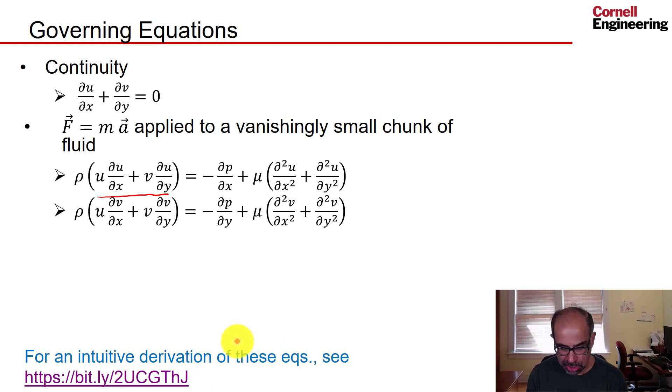Let's think about the unknowns in these partial differential equations. You have u as a function of x and y. In general it's also a function of z, but we'll assume that the flow is 2D, so u is only a function of x and y. Similarly, v is a function of x and y.